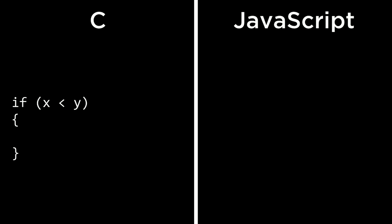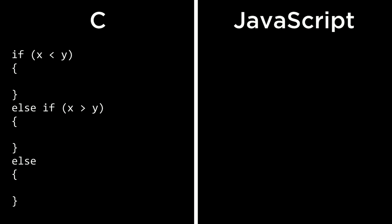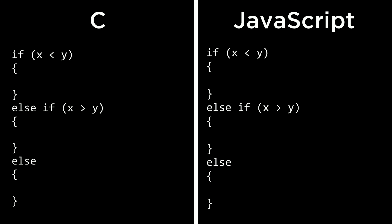In C, a condition that checked if x was less than y used if (x < y) with curly braces enclosing the body. In JavaScript, that syntax is identical. Adding an else case works the same way — else followed by another set of curly braces. And just as in C, we can chain else-if conditions in JavaScript as well.